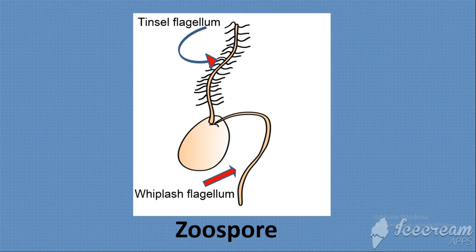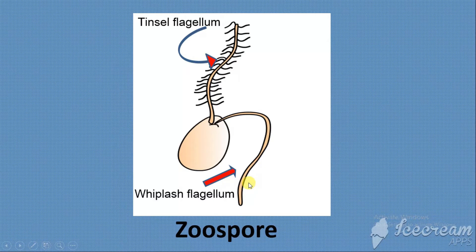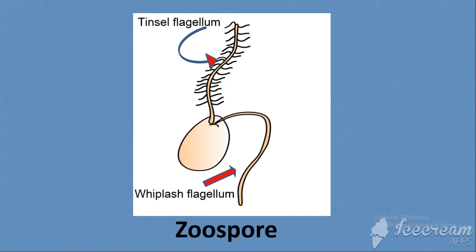In the center, you can see the body of the spore. In the upper part, the extension is called the tinsel flagellum, which is actually a decorated or feathered flagellum. In the lower part, you can see the whiplash flagellum. This is the general structure of a zoospore — the flagellated or motile spore of the members of Mastigomycotina.